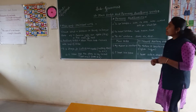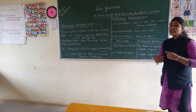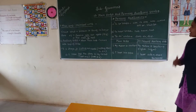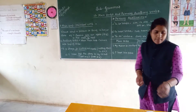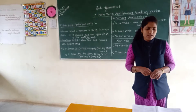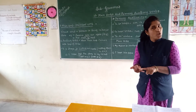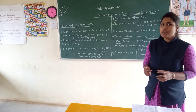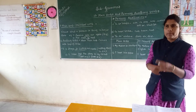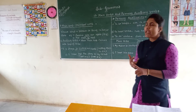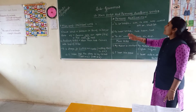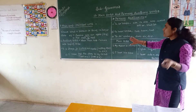Now, the next point is primary auxiliaries. A primary auxiliary verb is used in forming tenses, moods, and voices. There are three primary auxiliaries. The first one is the 'to be' form. The second one is the 'to have' form. And the third one is the 'to do' form.